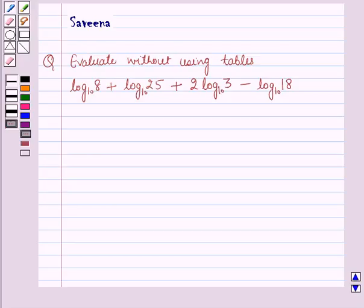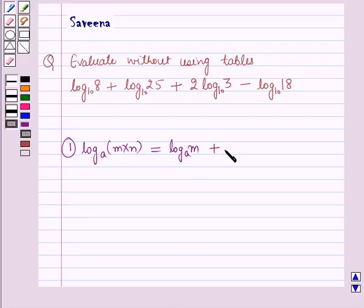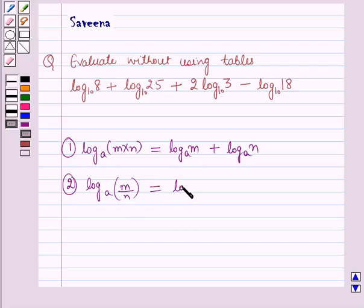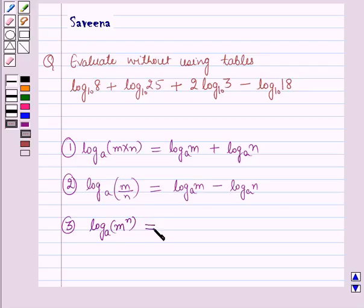Before starting the solution, we should know the laws of logarithms. The first law is log(m×n) to the base a equals log m to the base a plus log n to the base a. The second law is log(m/n) to the base a equals log m to the base a minus log n to the base a. The third law is log m raised to power n to the base a equals m log n to the base a.